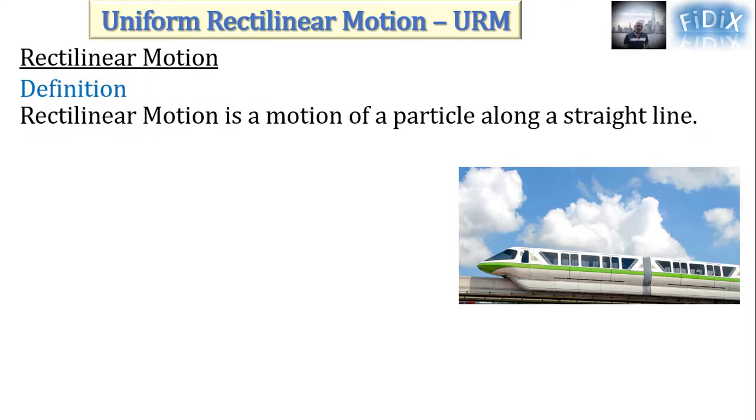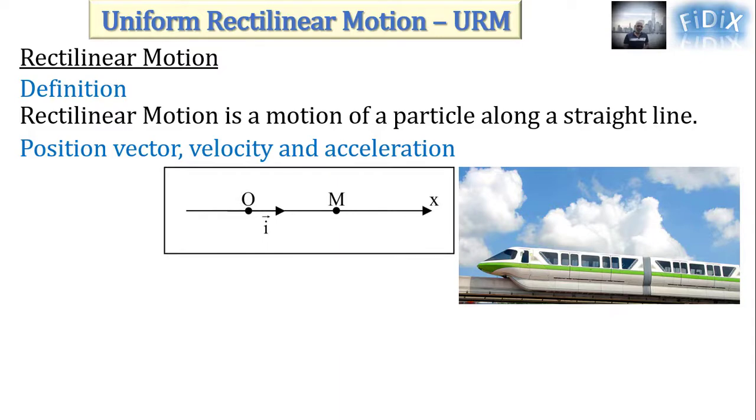Rectilinear motion is a motion of a particle along a straight line. It can therefore be described mathematically using only one spatial dimension to determine the position vector, the velocity, and the acceleration vector.